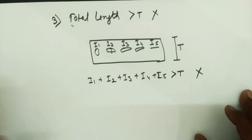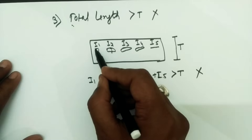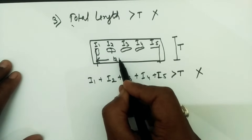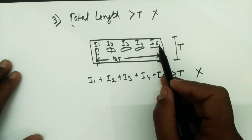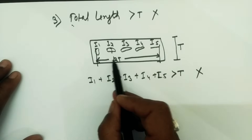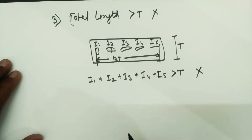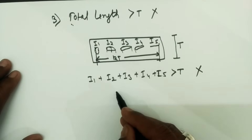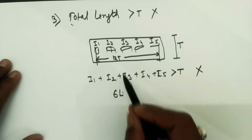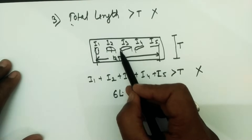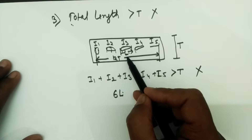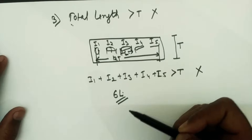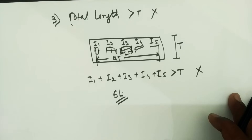There are two additional conditions for the group indication rule. First, the group of indications shall be within a total length of 12T from the first to the last indication. Second, the successive distance between indications — for example I1 to I2, or I2 to I3 — shall not be more than 6L, where L is the length of the longest indication in the group. This was the final criterion for acceptance or rejection of linear indications.